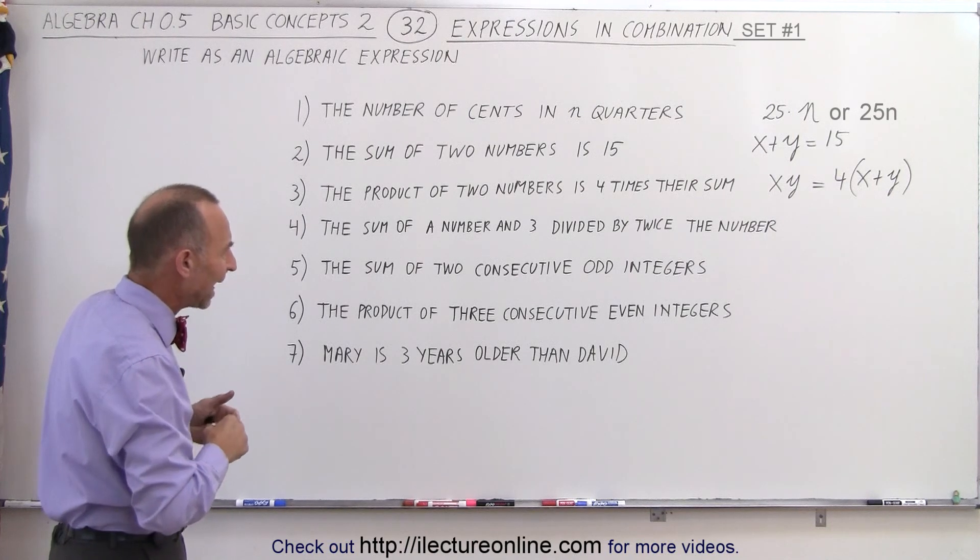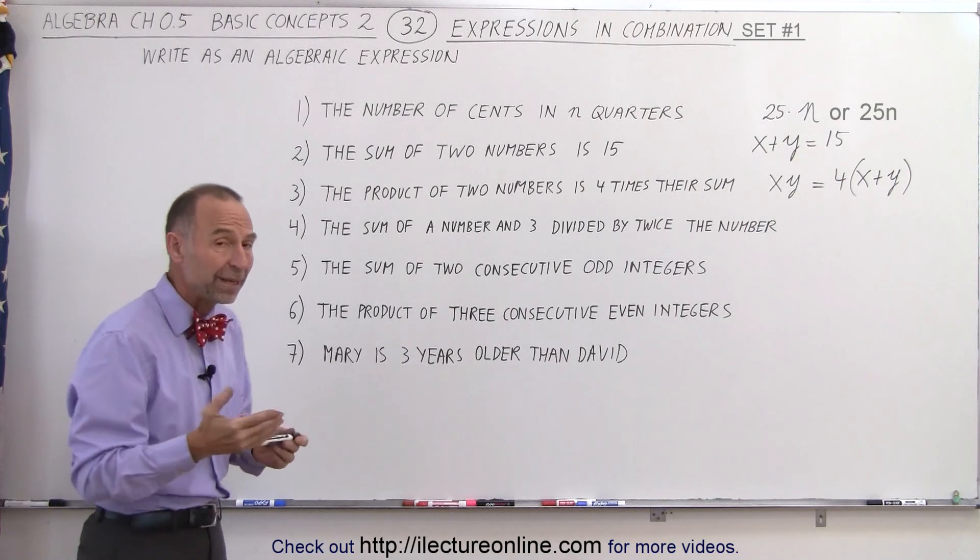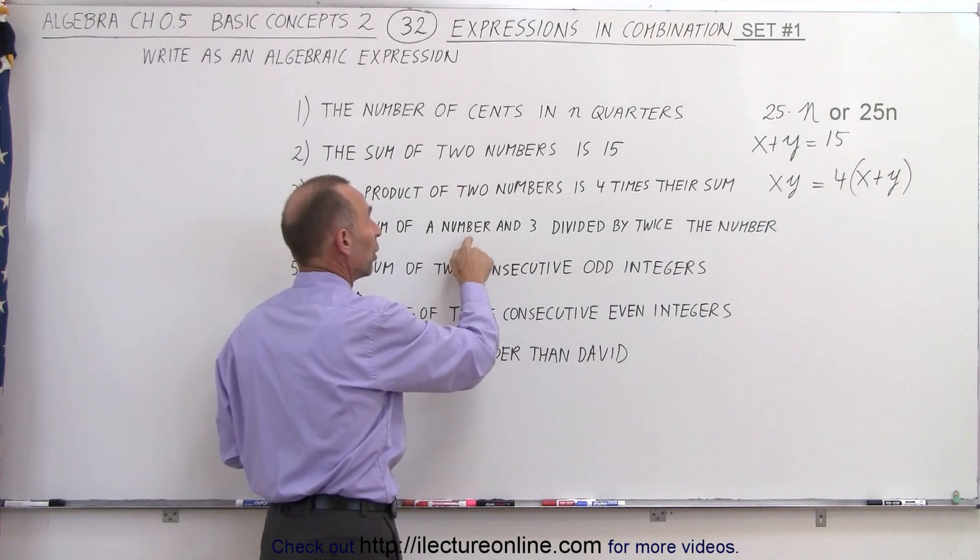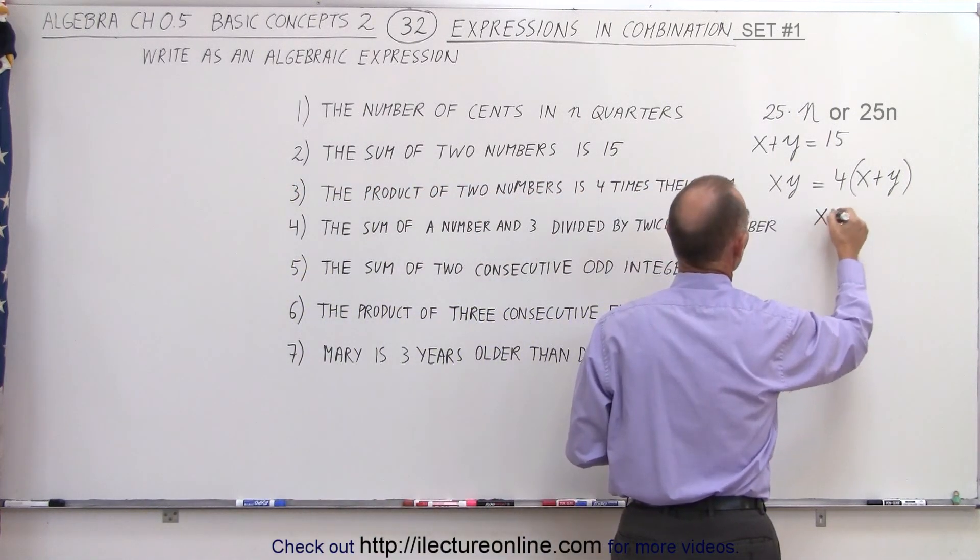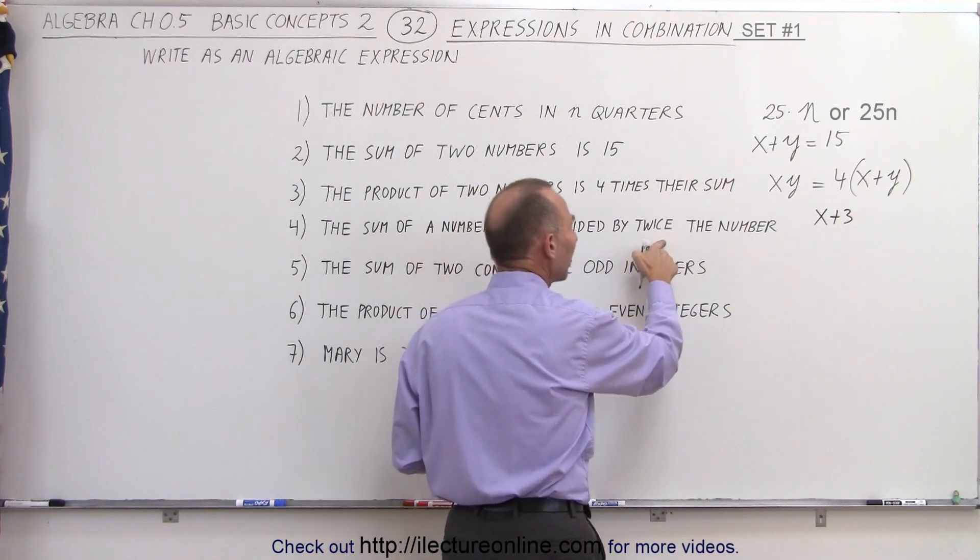The sum of a number and 3 divided by twice the number. The sum means we're going to add two numbers together. One of them is known, three. The other one is not known, a number. So we use x for that. So we write the sum, x plus three. And then we divide that by twice the number. So we divide that by two times x, because two times x is twice the number.